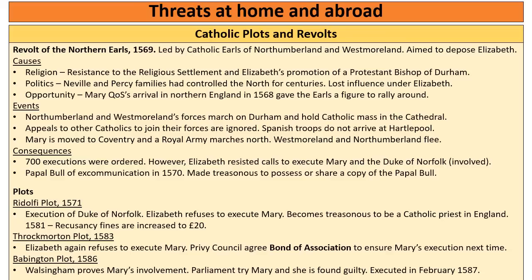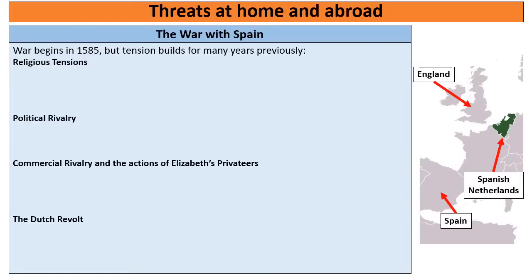This is really the end of the threats to Elizabeth in England at home, but just the start of the threats from abroad. In 1585 we see the beginning of the war with Spain, which dominates the rest of Elizabeth's reign and is the most important issue she faces. There are four main causes of the war with Spain: religious tensions, political rivalry, commercial rivalry, and the Dutch revolt. Pause the video and see what you can remember about these four causes.